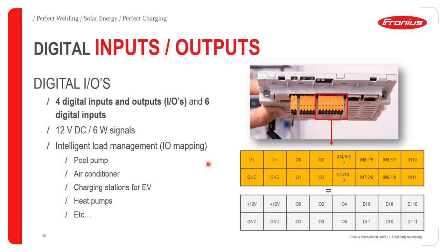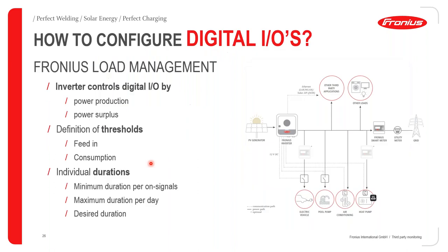Looking at the digital input/output ports: there are four free digital input/output ports, 12 volts DC with a power capacity of 6 watts, that can be used to intelligently manage loads. These loads could include pool pumps, air conditioners, control ports for EV charging stations, and heat pumps.